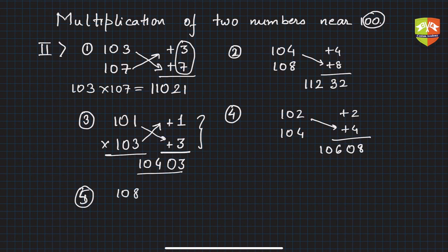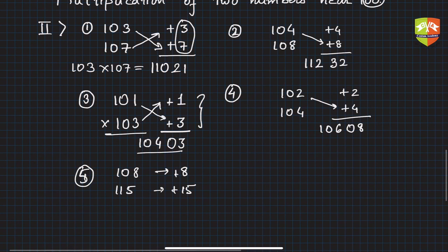8 times 15 is 120, but you take only the last two digits: 20. The 1 is a carry. Then 115 plus 8 is 123, and 123 plus the carry 1 is 124. So the product is 12420.